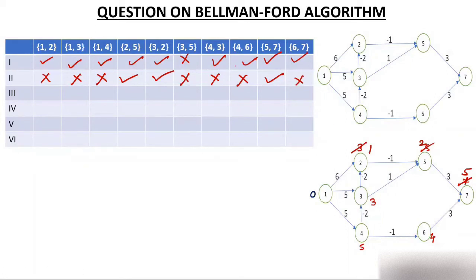After the second pass, the changes are: node 2 = 1, node 5 = 2, node 7 = 5. The rest remain the same. Since there were changes, I will repeat for a third pass.